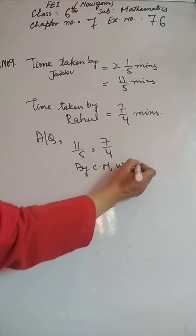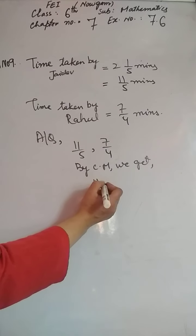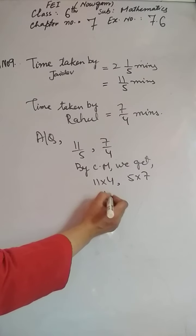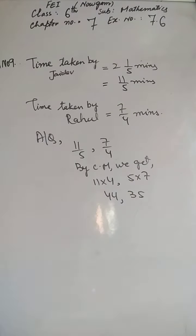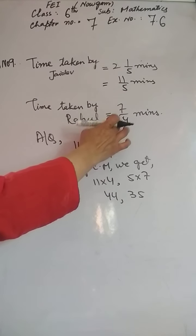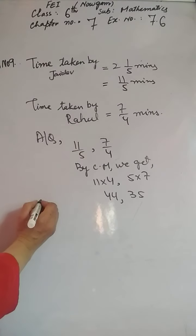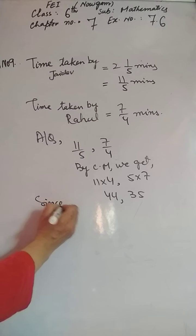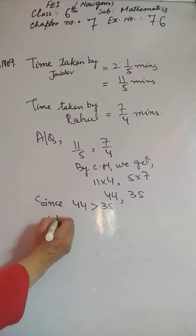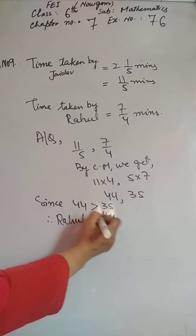Cross multiplication: 11 into 4 = 44, and 5 into 7 = 35. Kisne kam time liya? 35 wala — yeh Rahul ka hai. Since 44 is greater than 35, therefore Rahul takes less time.